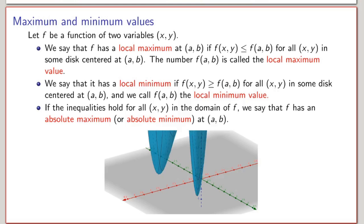We can also talk about absolute maxima and minima. If the inequalities hold for all (x, y) not just near the point, but for all (x, y) in the domain of the function, then we say that f has an absolute maximum or minimum at this point.